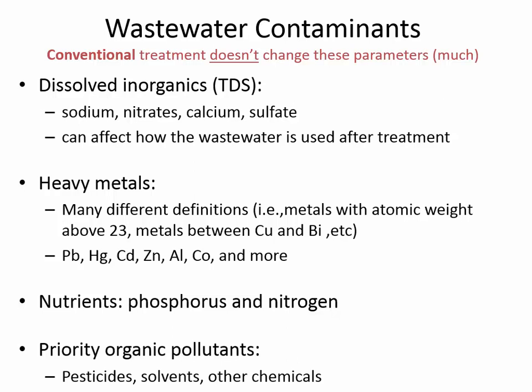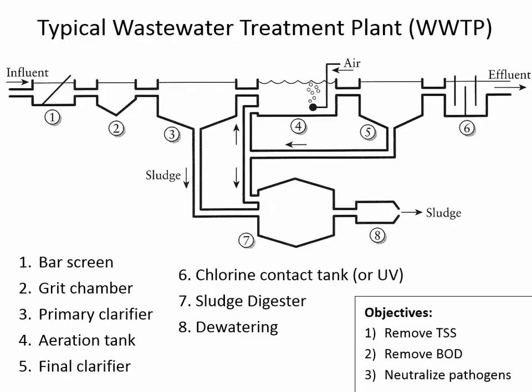Nutrients like phosphorus and nitrogen aren't removed in conventional treatment — they're in tertiary treatment, meaning beyond secondary. Priority organic pollutants are things like gasoline and dry cleaning fluid — organic chemicals that shouldn't be in the wastewater to begin with. Here's an overview of a wastewater treatment plant. We're going to spend a class period going through one or two of these different steps, starting with preliminary treatment: a bar screen used to remove things like toilet paper — anything big enough to go through a screen spaced anywhere from one millimeter to one centimeter.